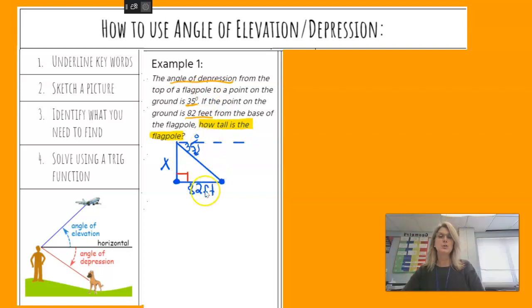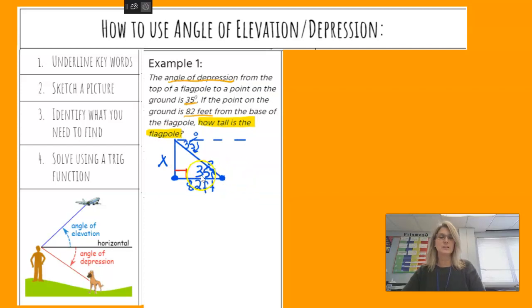Now, the 82 feet is from the base of the flagpole to where that point you're looking at. And so that's why the 82 goes here. And you're asked in the yellow here, how tall is the flagpole? That's my vertical side length. Let's put in that angle of elevation inside the triangle. Those are congruent. So there I have my triangle labeled.